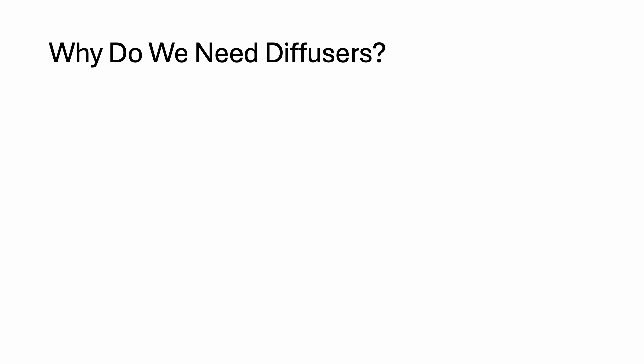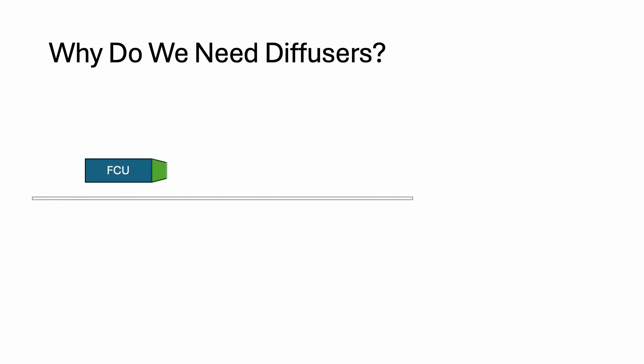First of all, why do we even need a diffuser or a grill? In a ducted air conditioning system, we run rigid duct and stop at the point where we want to provide the airflow. Then we use a flexible duct and connect it to the diffuser.